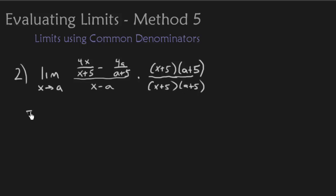Alright, so let's go ahead and multiply that out. Notice that when you take this term and you multiply it on to here, the x plus 5's are going to cancel, and that's going to leave just the a plus 5 with the 4x. Let's go ahead and do that. We're going to get 4x, a plus 5, the x plus 5's will cancel.